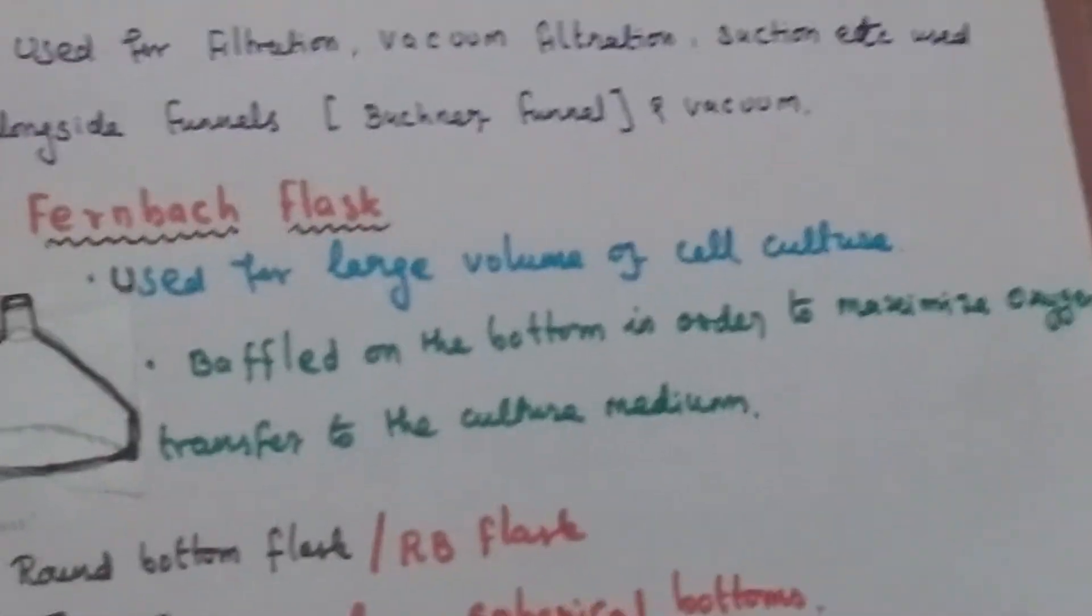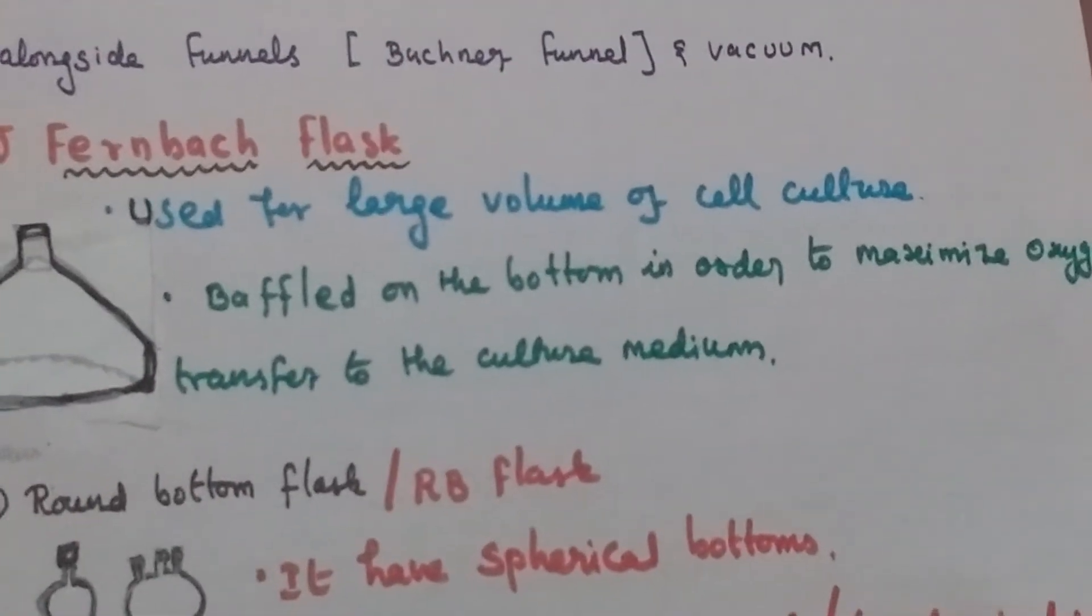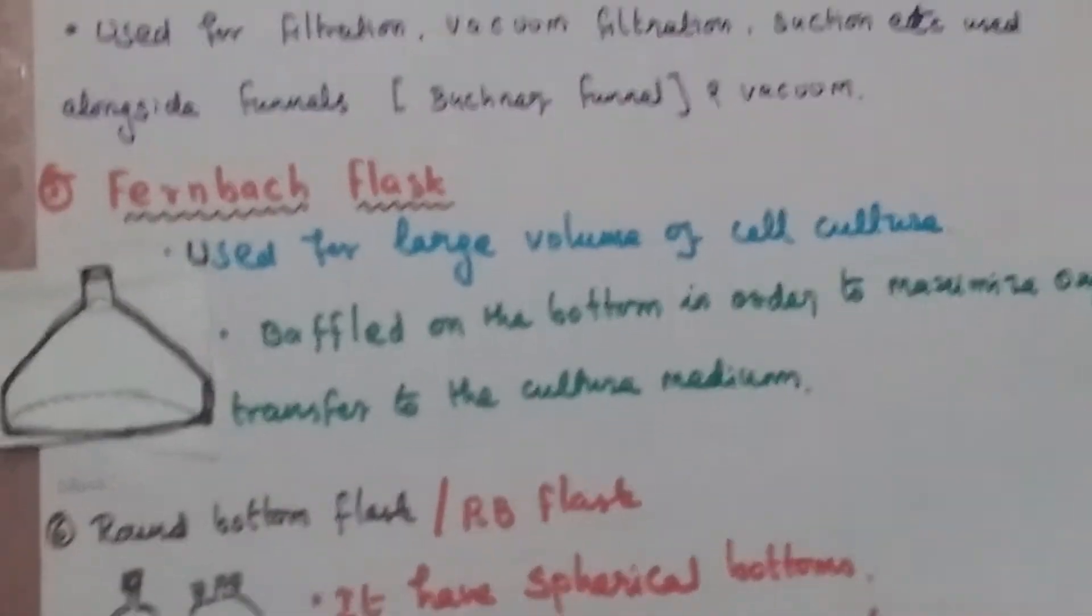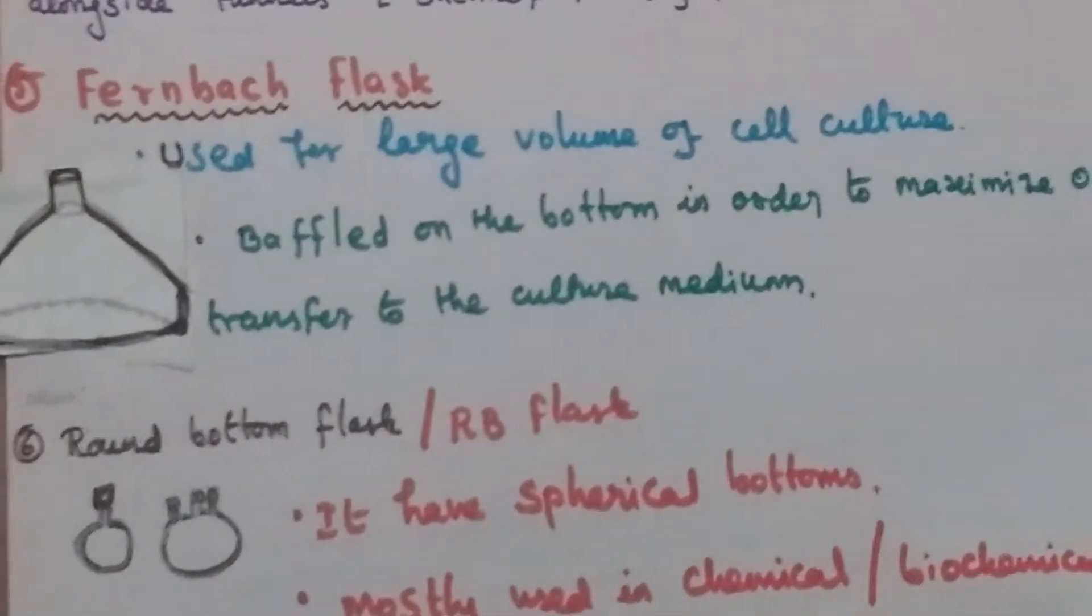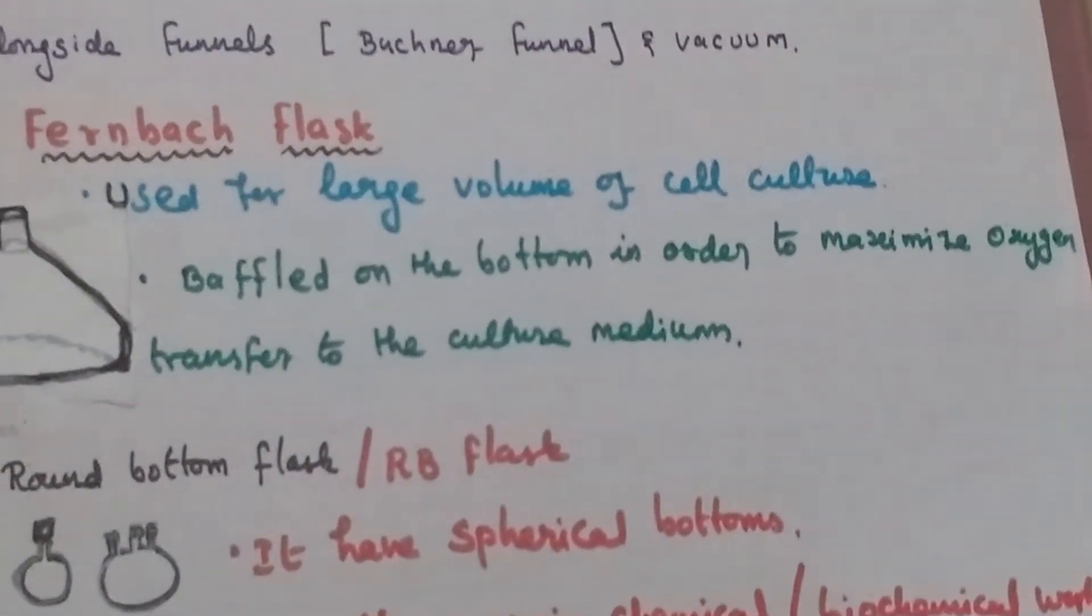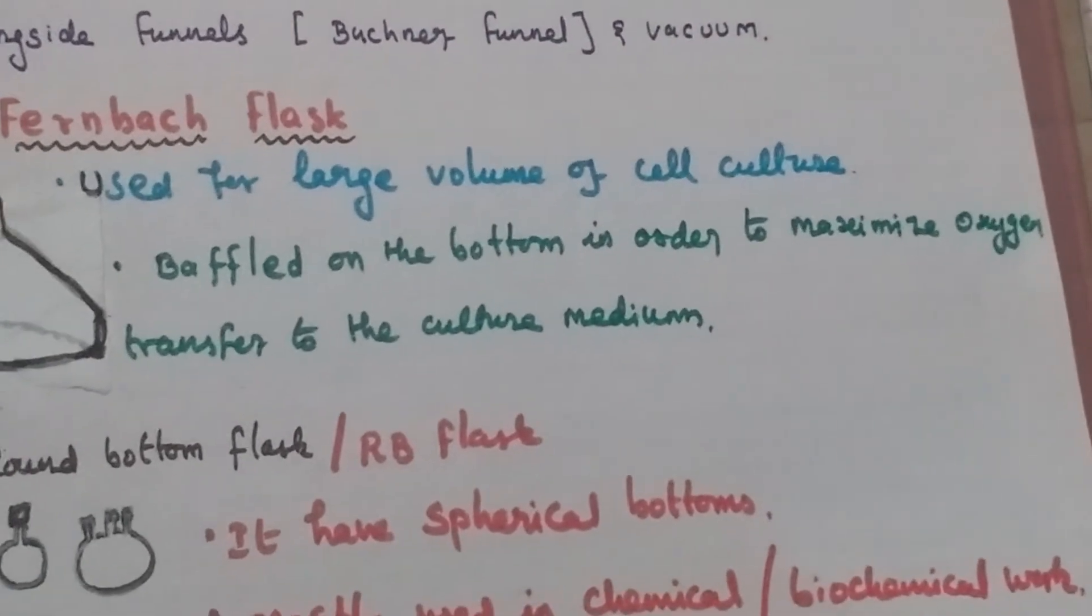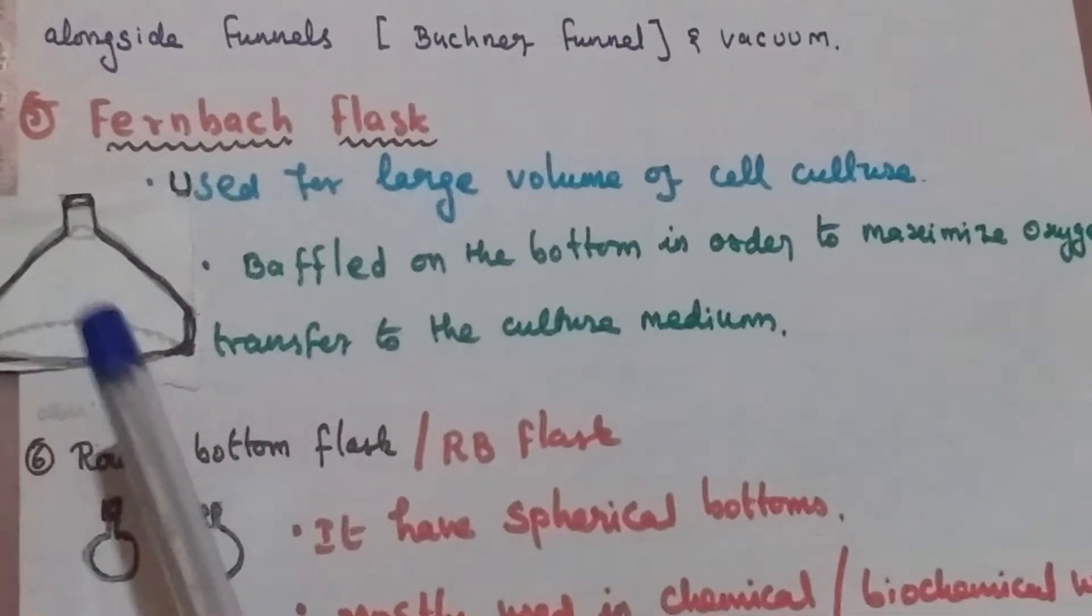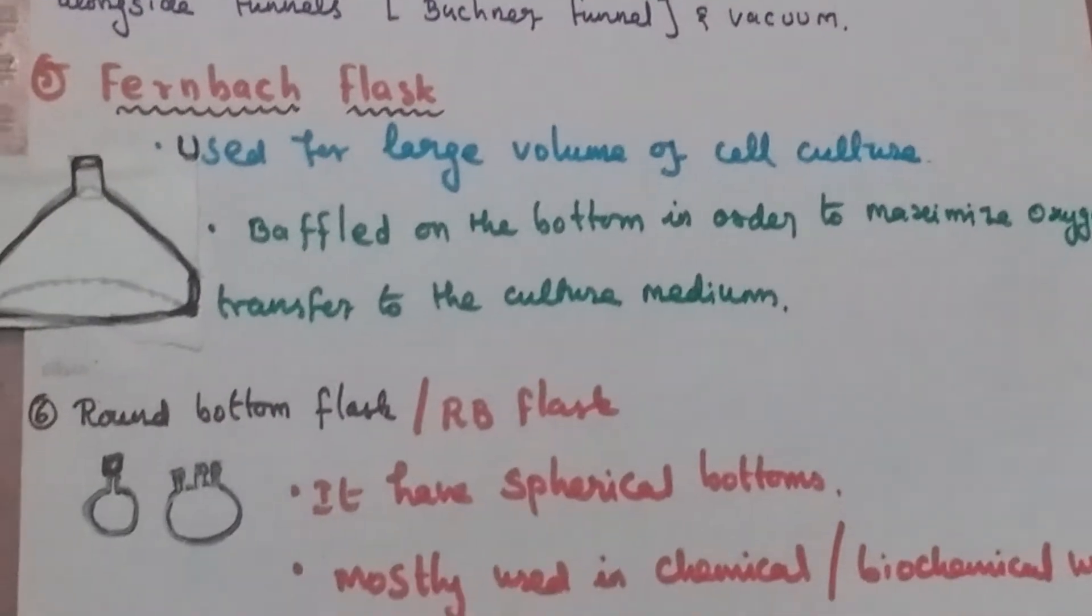Fifth is the Fernbach flask, used for large volumes of cell culture. It has a baffled bottom in order to maximize oxygen transfer to the culture medium. This flask is mainly used for cell culture.